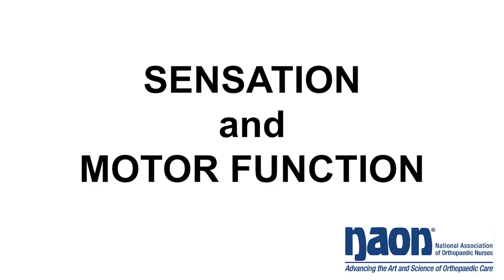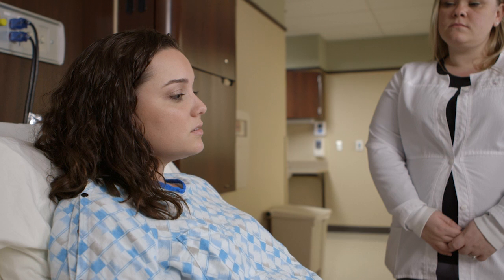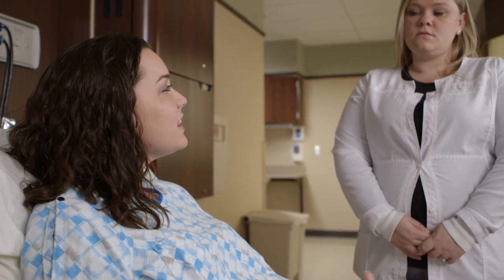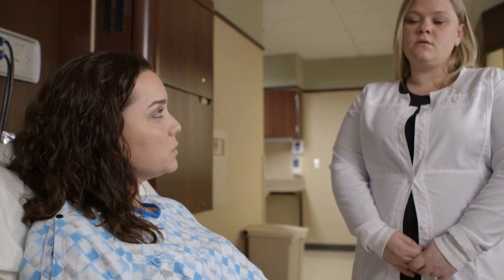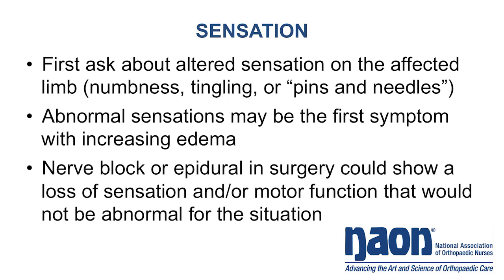Sensation and motor function. To assess sensation, first ask the patient if he or she feels any altered sensation on the affected limb, such as numbness, tingling, or pins and needles. If present, it is important to determine the specific location. These signs indicate neurologic compression and could mean increasing pressure in the compartment or spinal compression. If these are new findings, they should be reported to the physician. Remember, too, that if the patient received a nerve block or epidural in surgery, there could be loss of sensation and/or motor function that is expected.